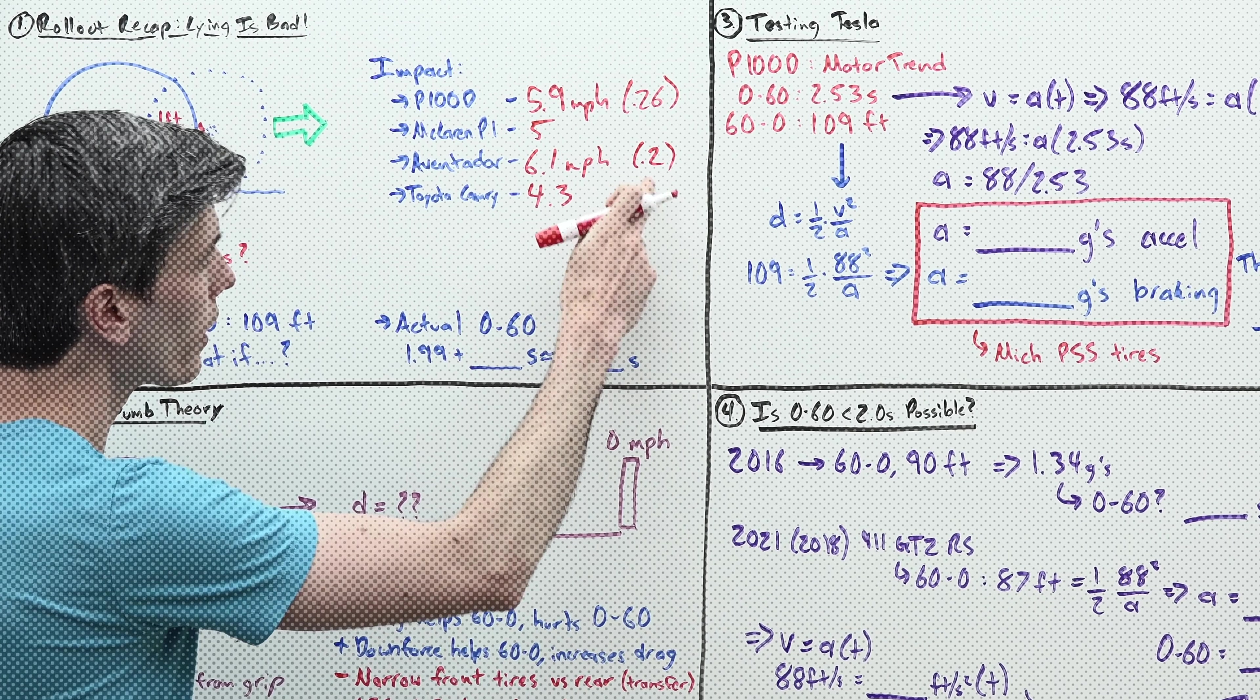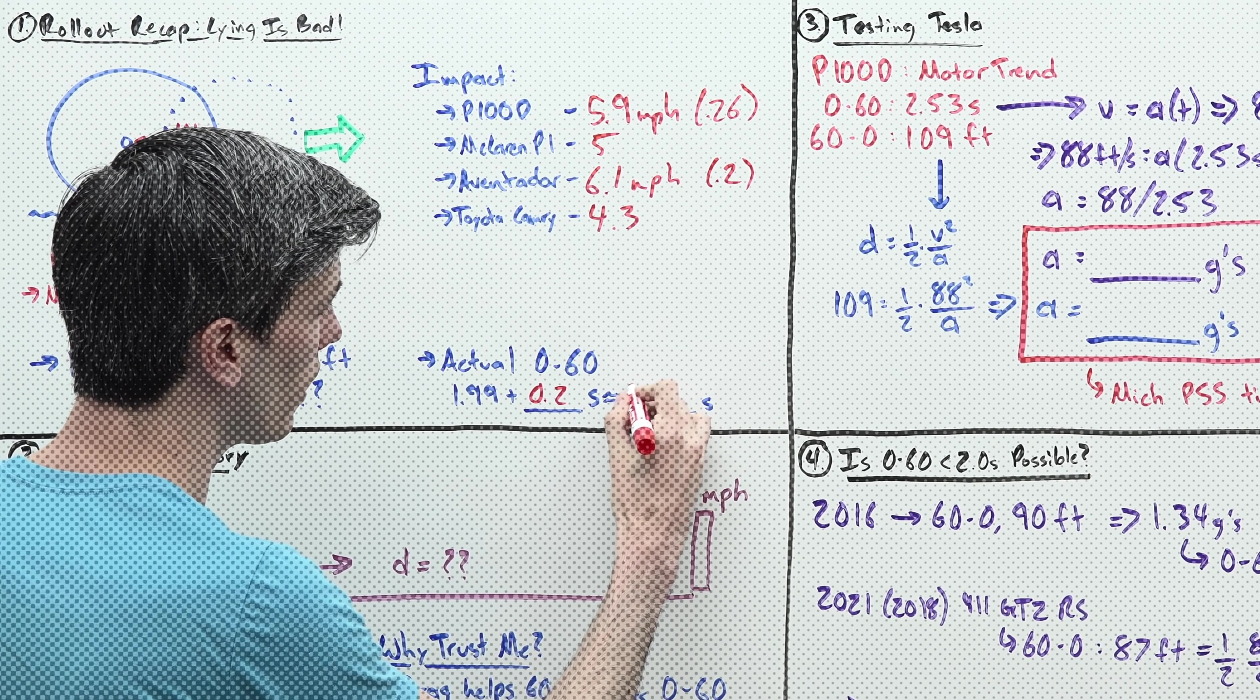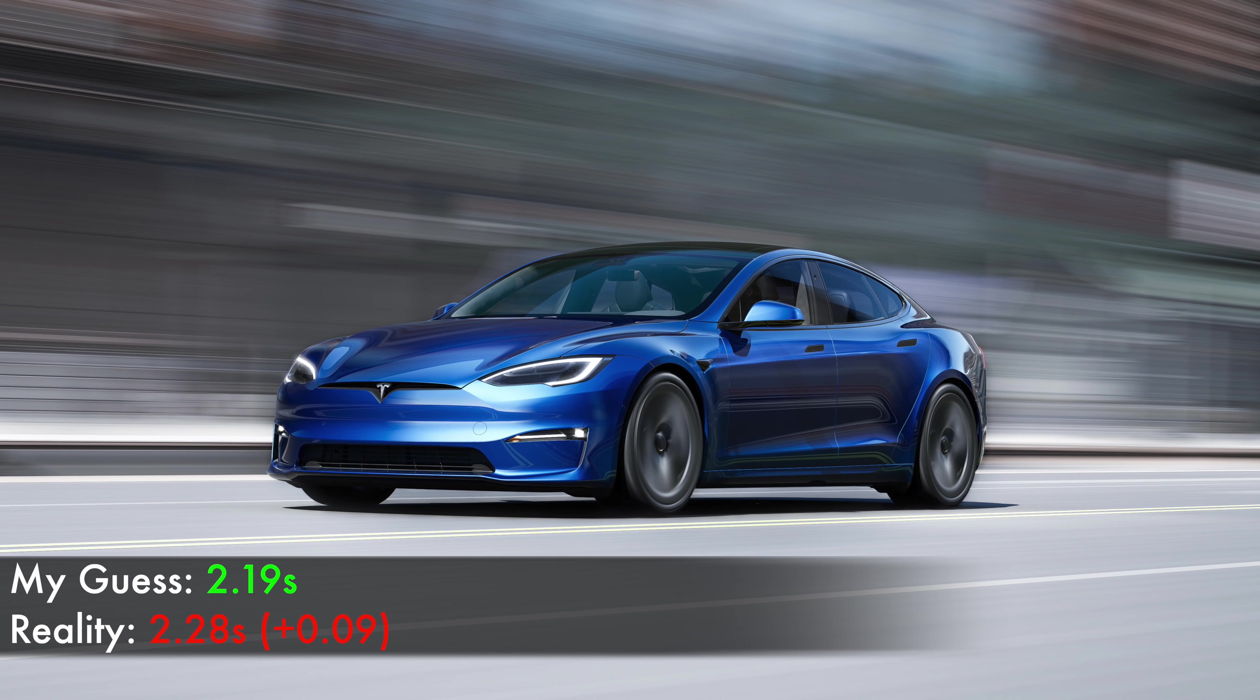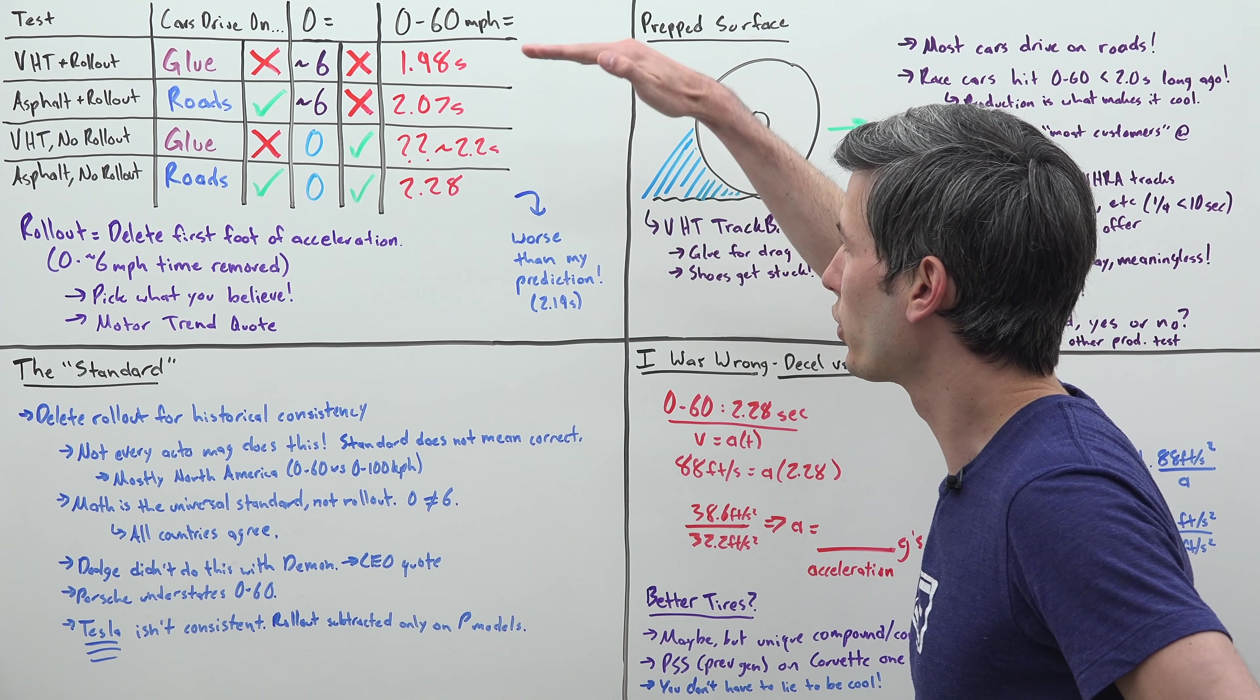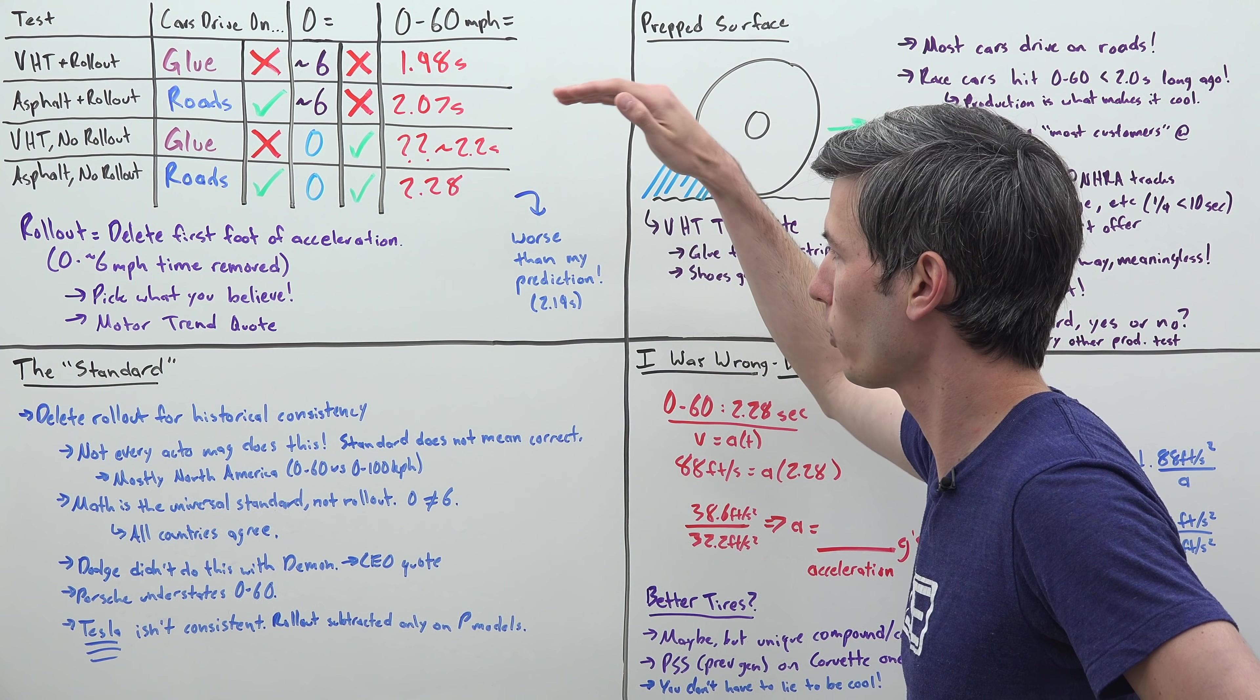In my previous video when I said Tesla wouldn't hit that 0 to 60 in under 2 seconds, the number I came up with was 2.19 seconds, and in reality it's 0.09 seconds slower than that, so 2.28 seconds. You can choose which one of these you want to believe, but in my head there is only one that's remotely accurate.